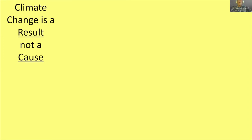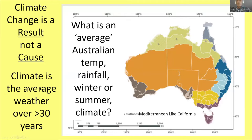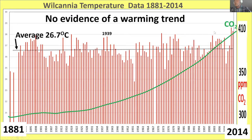One thing to start with: climate change is a result of processes, not a cause of anything — but people often talk about it as if it were. Climate is generally agreed to be an average of weather over a 30-year period. Here's temperature data from Wilcania from 1881 to 2014. You can see the average is 26.7 degrees centigrade for the whole period, and not an awful lot is happening in terms of trends. The only trend that is increasing is CO2 — and it doesn't seem to be affecting warming in any way, either positive or negative.